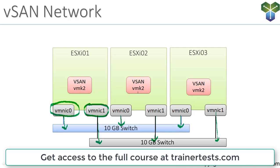On each of these ESXi hosts we have created a VM kernel port and tagged it for vSAN traffic. If you're not familiar with VM kernel ports, what this basically means is we've created this little port, given it an IP address, and said: if there is traffic related to vSAN — if a virtual machine needs to transmit traffic related to vSAN from host to host — use this VM kernel port. We have to have that network in place in order for vSAN to work properly.